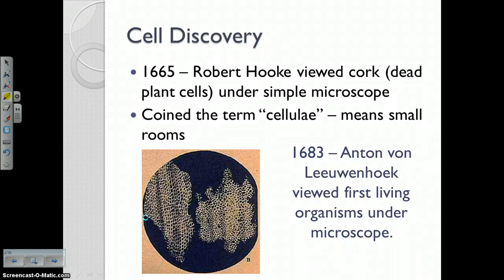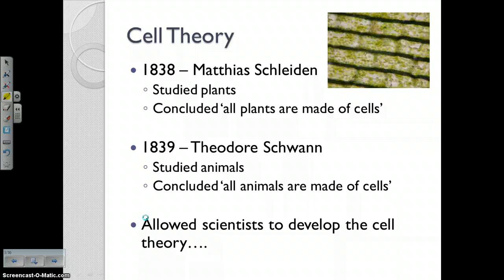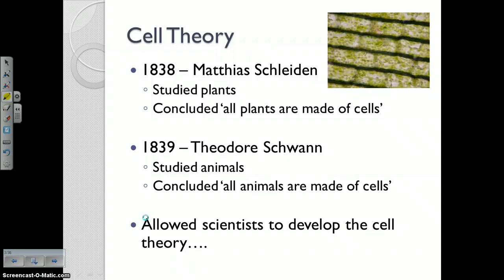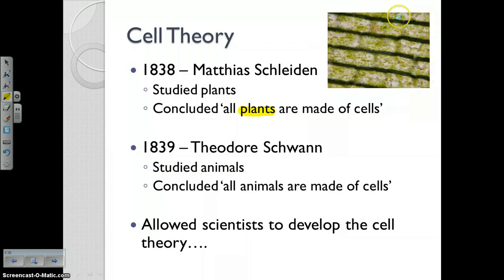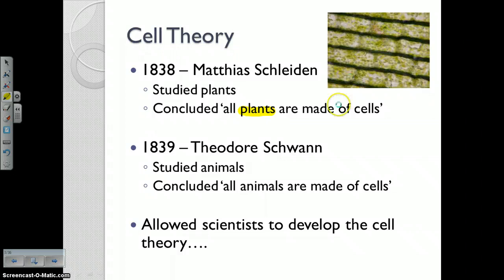You should be filling in number three on your notes organizer. Then you had two scientists that really contributed to our understanding of the cell theory, and that was Schleiden and Schwann. Schleiden studied a whole bunch of different types of plants and noticed that all plants are made up of cells. No matter what type of plant he looked at underneath the microscope, they consisted of cells — you can see some plant cells here, probably similar to what he saw. Then a year later, Theodore Schwann studied a whole bunch of different animal tissues and noticed that all of them were made up of cells, so he concluded that all animals consist of cells.